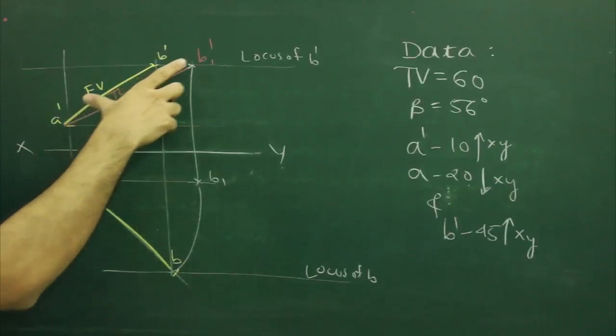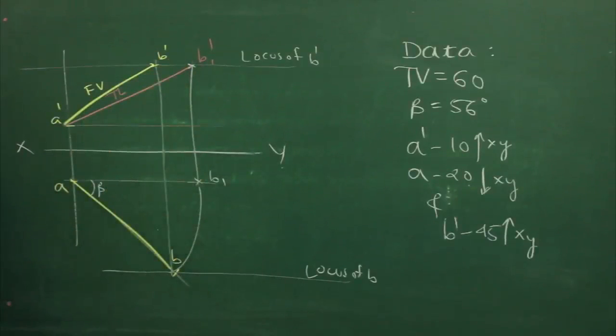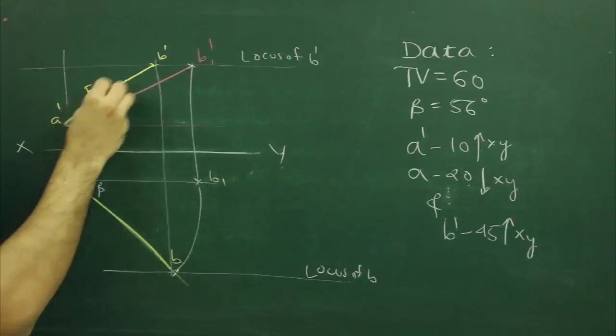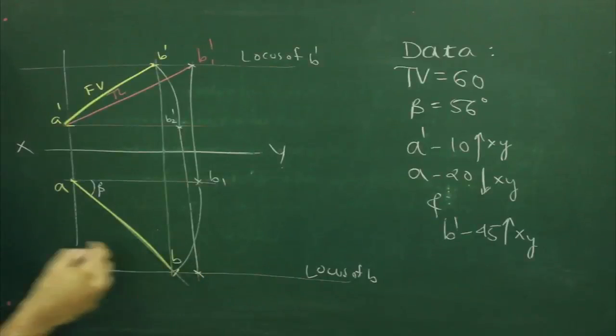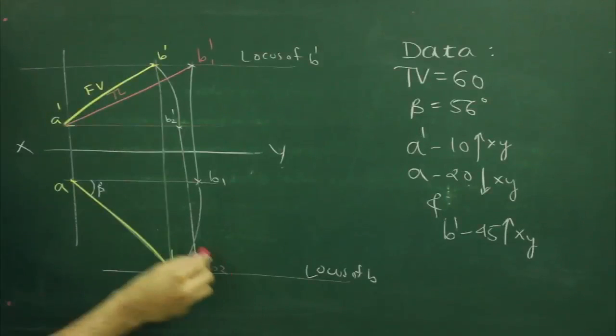And for true length, either we can take A dash B1 dash and cut it directly, or we can rotate A dash B dash until it intersects. Mark that point as B2 dash. Project down, wherever it cuts, that would be B2.